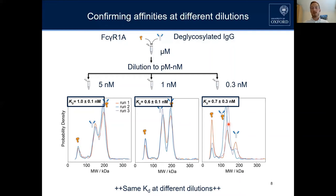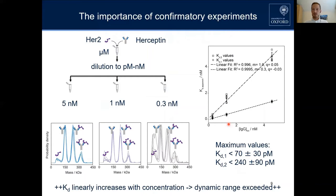We then tried to benchmark further and see where the limit is. For this, we picked an interaction known to be really tight and strong — this is also probably why Herceptin is one of the most successful cancer drugs — the interaction is extremely tight. So we mixed Herceptin and its target, the HER2 receptor, together and did another dilution series.